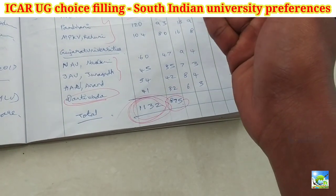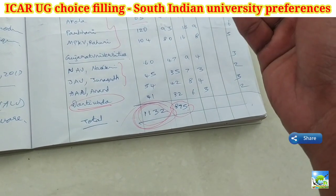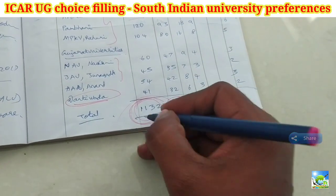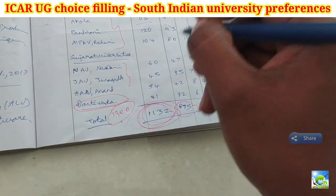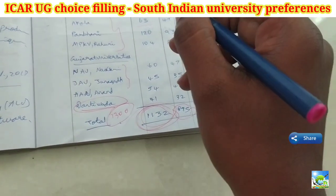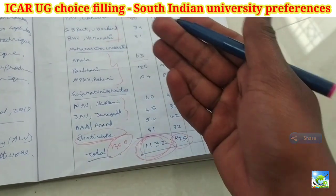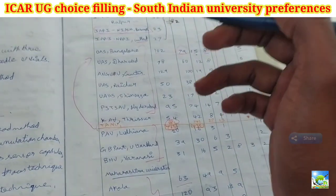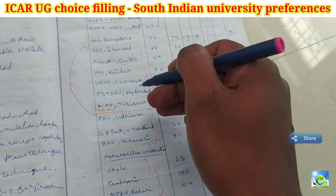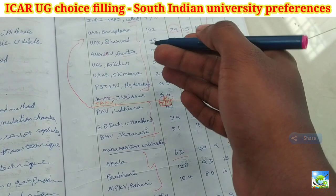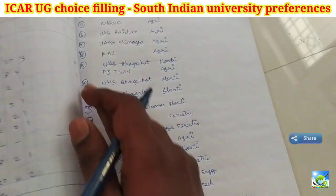Excluding TNAU, the total seats for BSc Agriculture are 1132 and unreserved category seats are 875. If TNAU is included it goes to around 1300 seats. Some people texted me with general rank 1200 or 1300 — from this you can conclude that with 1300 seats available, you will almost certainly get a seat through ICAR counseling in these universities. Not everyone fills these choice preferences the same way — others may put Raichur and Shimoga last, but we put them in the top for our convenience.